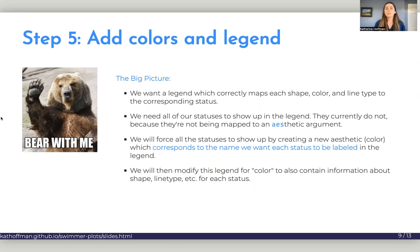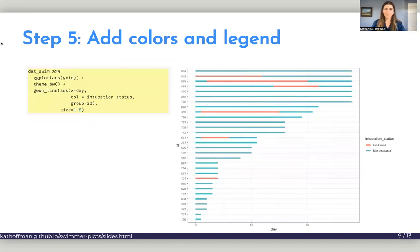So bear with me. The big picture is that we want a legend that is going to correctly map every characteristic of our statuses into the legend, like actually show it. And to do that, we need all of our statuses to first show up in the legend, which they currently don't because they're not being mapped to aesthetics. We're going to force all the statuses to show up by creating a new aesthetic, which is going to be color that corresponds to the name we want each status to be labeled in the legend.